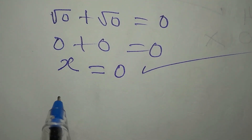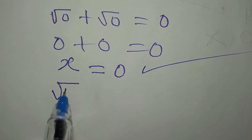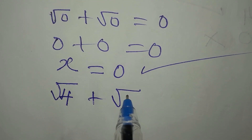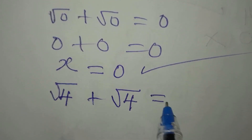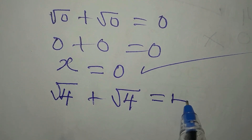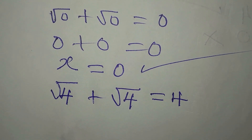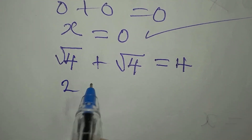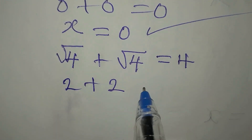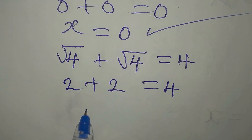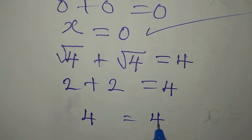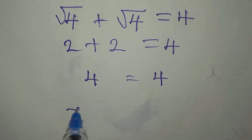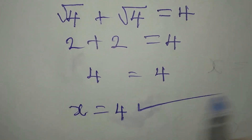For the second solution, we have square root of 4 plus square root of 4 equals 4. It is obvious that this satisfies as well, because square root of 4 is 2, and 2 plus 2 is 4. So x equals 4 also satisfies the equation.